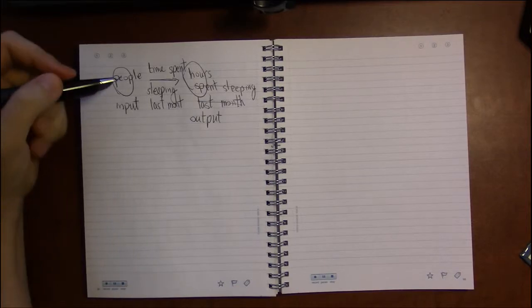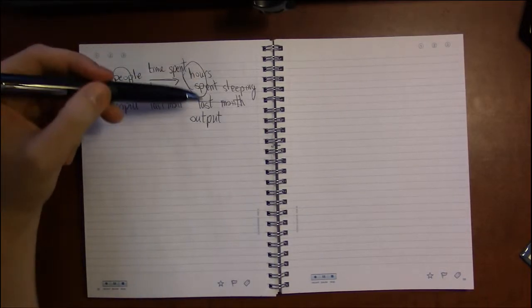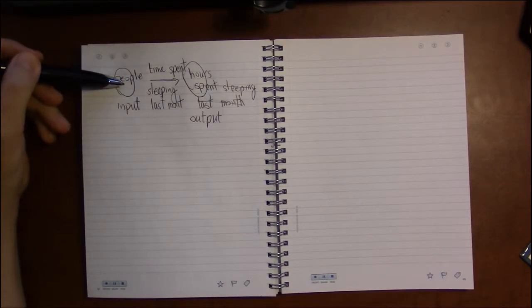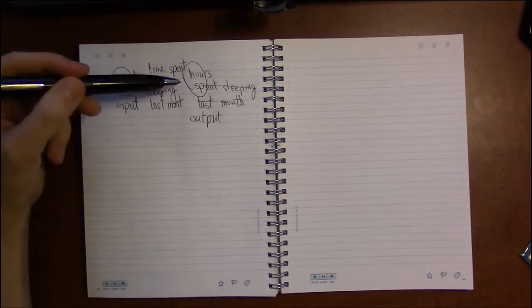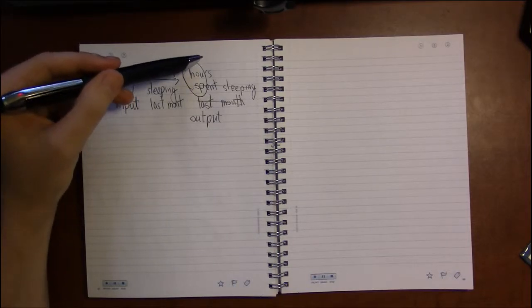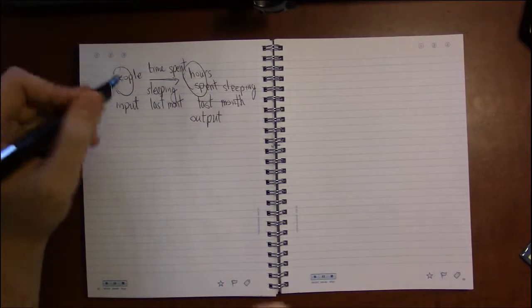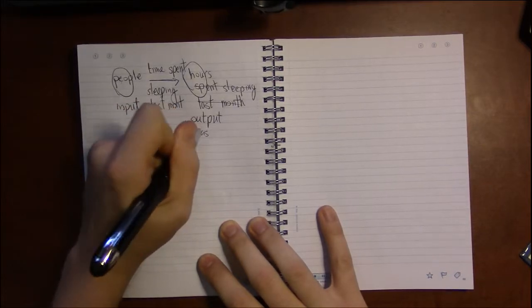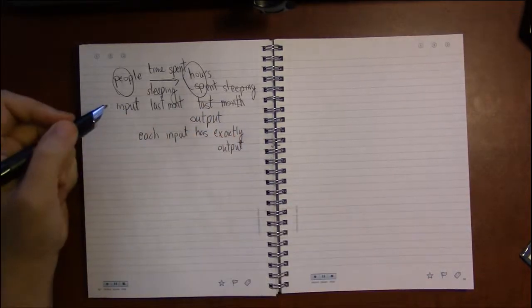This would be something like... there are people who do research on sleep and sleep behavior. This would be a quantity of interest to a sleep researcher: how people sleep. You take an individual person—either they slept some amount of hours or they didn't. It doesn't make sense: how could a person sleep 40 hours last month and 60 hours last month? So each person, each input, has exactly one output associated to it. This is a function.